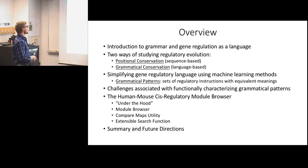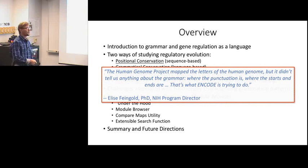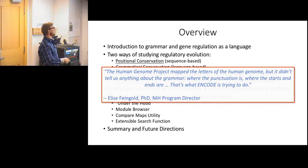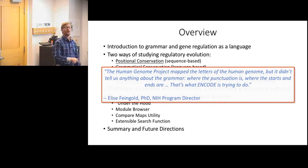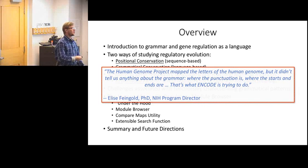Before my first slide, I want to bring up a quote from Elise Feingold, an NIH program director for ENCODE: 'The Human Genome Project mapped the letters of the human genome, but it didn't tell us anything about the grammar - where the punctuation is, where the starts and ends are. That's what ENCODE is trying to do.' I thought this was very timely and a good way to give context to this project.